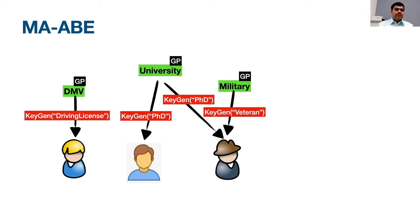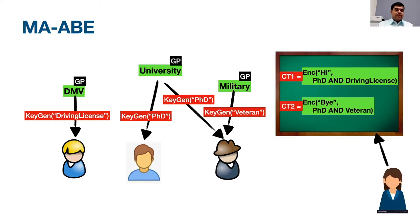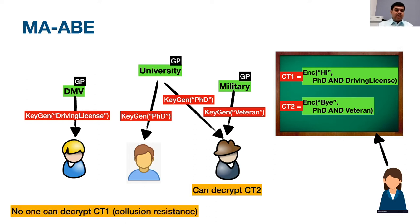Consider an example with three authorities: DMV, university, and military, and three users. The first user gets a key from DMV for driving license. The second and third users, both having a PhD, get corresponding keys from the university, and the third also gets a key for veteran from the military. An encryptor encrypts 'hi' under the policy 'PhD AND driver's license' and 'bi' under the policy 'PhD AND veteran.' The third user, possessing both PhD and veteran attributes, can decrypt the second ciphertext CT2. Since no user has both PhD and driver's license, no one can decrypt CT1, demonstrating collusion resistance.